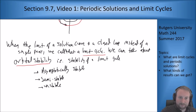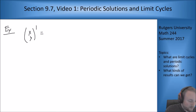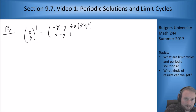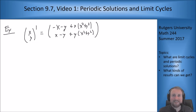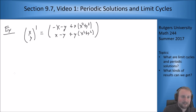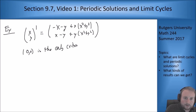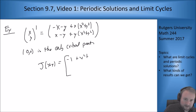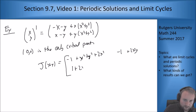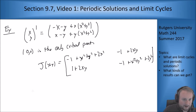Let's do an example that has a limit cycle. The system is: x' = -x - y + x(x² + y²) and y' = x - y + y(x² + y²). Let's analyze this via our normal method — the stability of the origin, which is the only critical point. So zero, zero is the only critical point. The Jacobian matrix comes out to be: [-1 + x² + y² + 2x², -1 + 2xy; 1 + 2xy, -1 + x² + y² + 2y²]. Plugging in zero, zero gives [-1, -1; 1, -1].